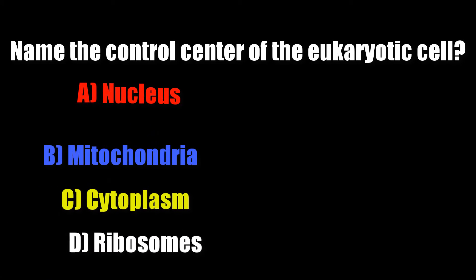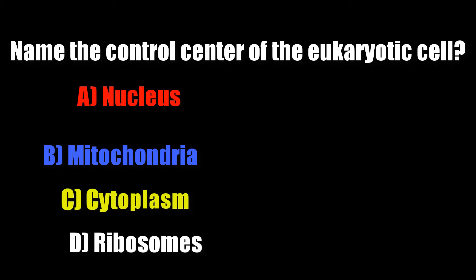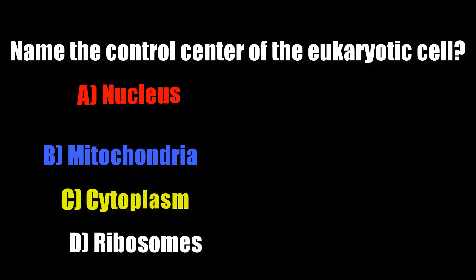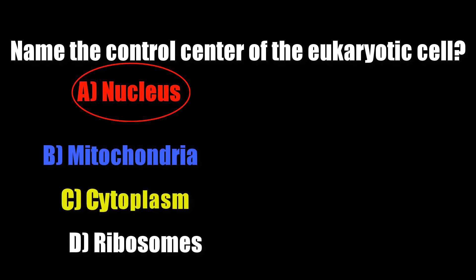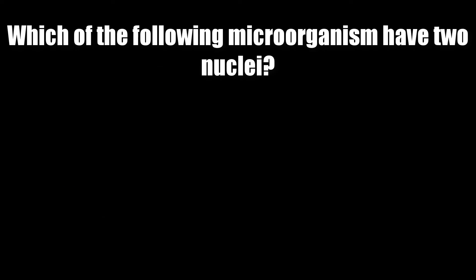Name the control center of eukaryotic cell. Options: nucleus, mitochondria, cytoplasm, ribosomes. Correct answer is nucleus.